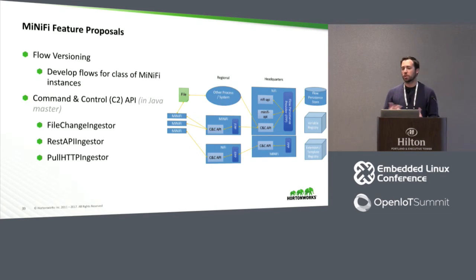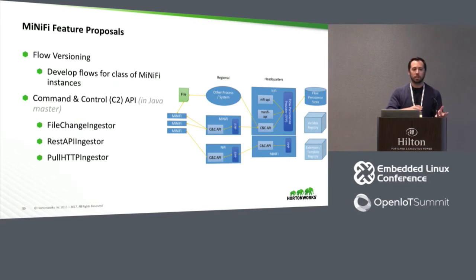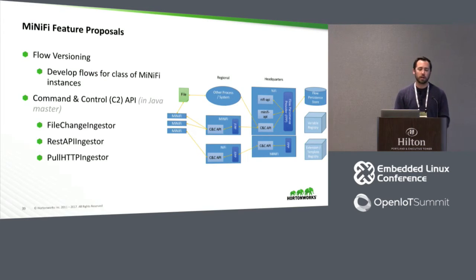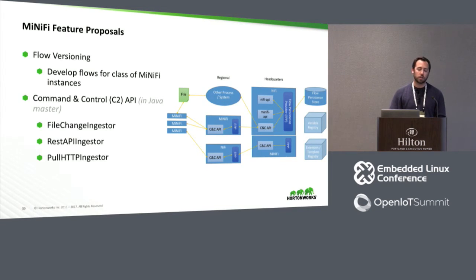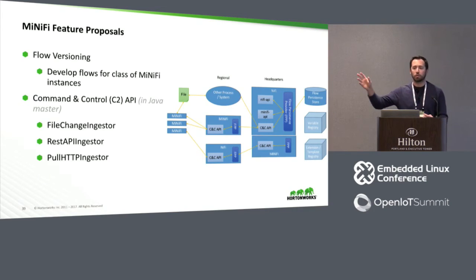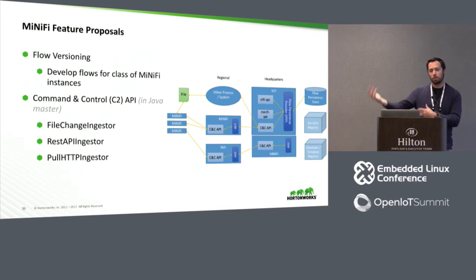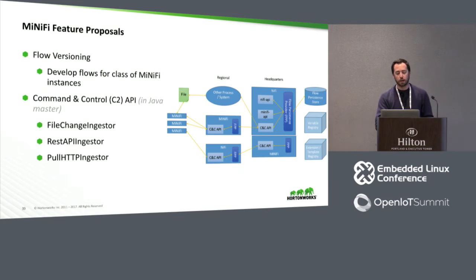This is a feature proposal for flow persistence and versioning. Versioning flows and going from development to testing to production — promoting flows through that lifecycle — is something we've been hearing a lot of requests for, so there's an effort underway. MiNiFi Java does have what we call a command control API with three ingesters. From the NiFi user interface where we design everything, we can build a new version of a flow and send it by writing it to a local file on the MiNiFi device, sending it to a REST API, or having MiNiFi reach out at certain intervals and pull from another API. There are three ways to get that new flow definition down to the MiNiFi instance and have it reload and start running the new flow.